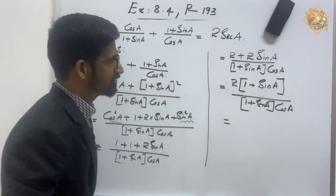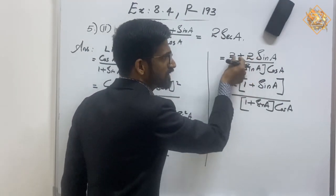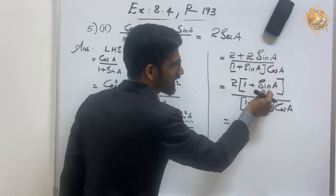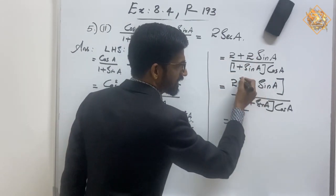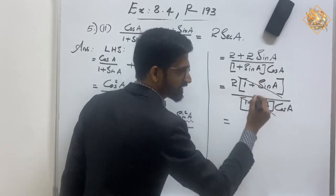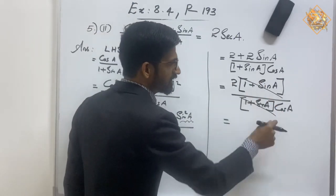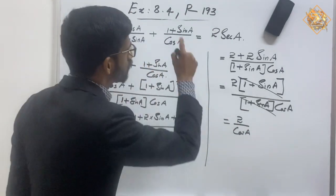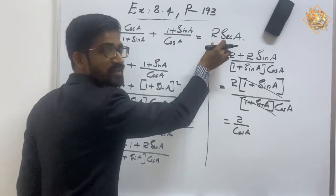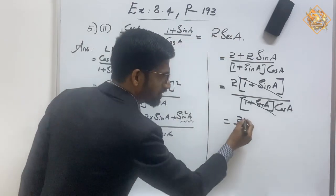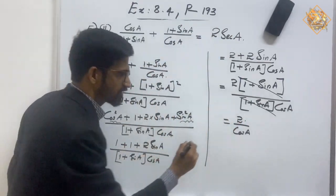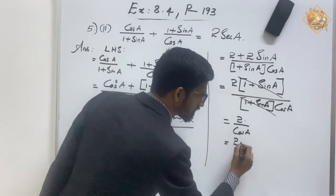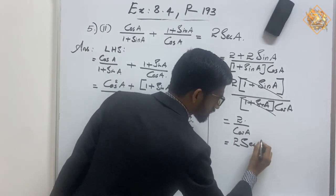So 2 is the common factor and we took it outside: 2 × (1 + sin(a)) in the numerator. Now we can cancel (1 + sin(a)) in the numerator and denominator since they are common. After cancelling, we finally get 2 / cos(a). Since 1/cos(a) = sec(a), we can write this as 2 × sec(a).